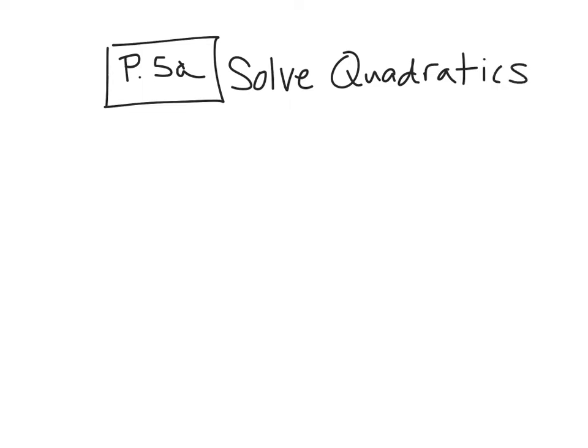We are not doing any imaginary numbers yet. Imaginary numbers don't come into play until P6, so we're not quite there. We're just going to do real answers today. So here we go. We've got four ways to solve a quadratic. The first way I'm going to start with is my favorite way to solve a quadratic, which is by factoring.